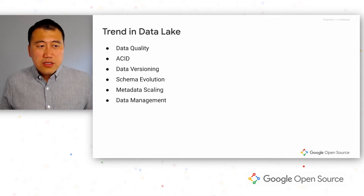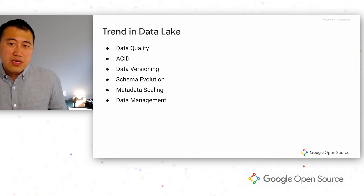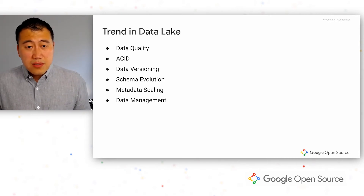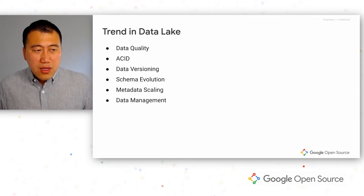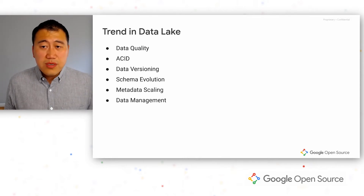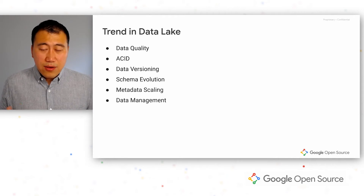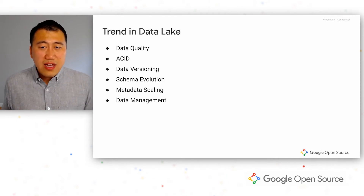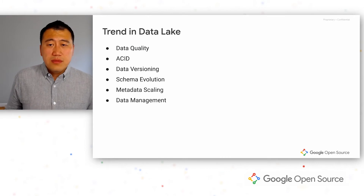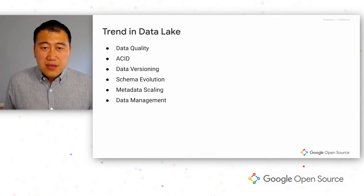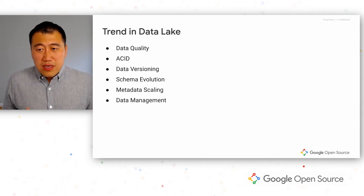Now that we've talked about Hive, let's look at the trends in the data lake world. As data storage becomes cheaper, people are thinking about bringing database-style technologies and features into the data lake. These include data quality requirements — data lakes used to be treated as raw storage where unprocessed, lower-quality data was ingested and had to be cleaned on retrieval. There are also requests around transactions, isolation, schema evolution, and data lineage.